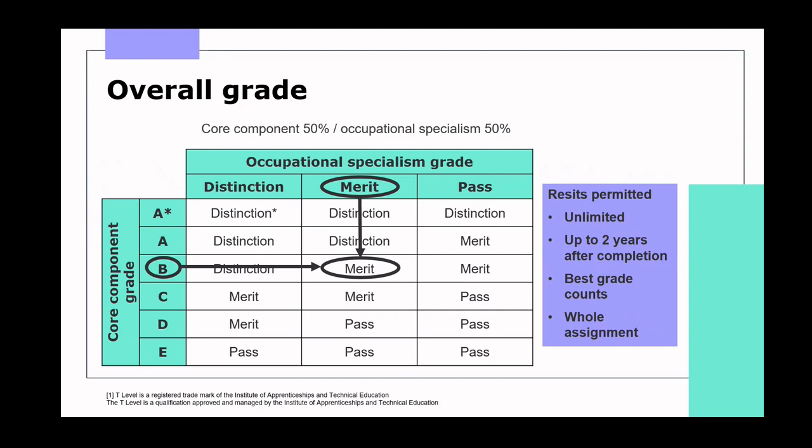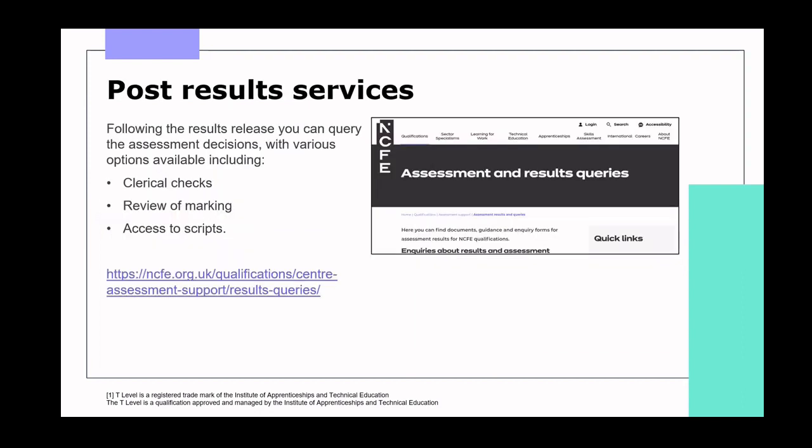While there isn't a limit on the number of resits students can take, there is a time limit — up to two years after completing the T-Level, meaning a maximum of two further attempts available. The resit would cover all assignments, as it's not possible to do individual assignments due to the linear nature of the assessment. Regarding results, if you have questions about grades, there are options available on a dedicated webpage, some with timeframes for submitting requests following results release, so be aware of these to avoid missing deadlines.